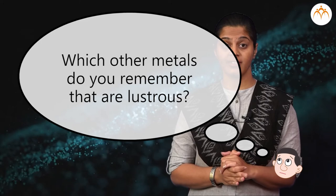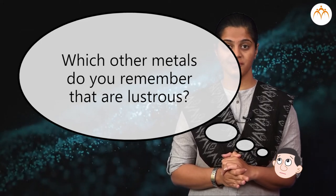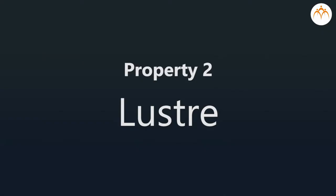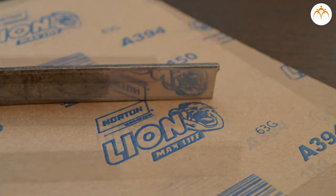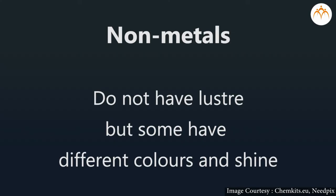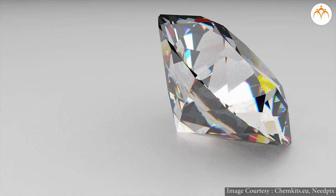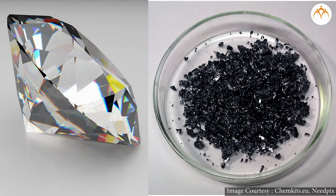Which other metals do you remember that are lustrous? Metals are lustrous. Non-metals do not have luster, but some have different colors and shine. Diamond, an allotrope of carbon, and iodine crystals are exceptional non-metals which shine and are lustrous.